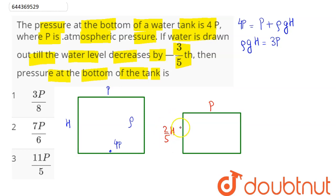Hence the pressure at the bottom, let's say P dash, will be equal to P dash equals P plus rho into g into 2H divided by 5.